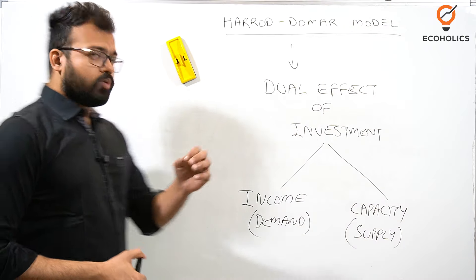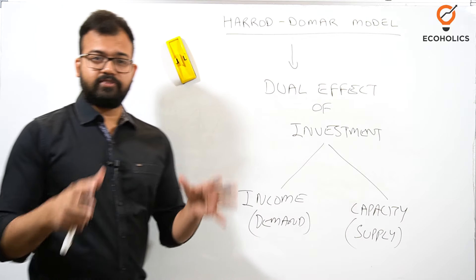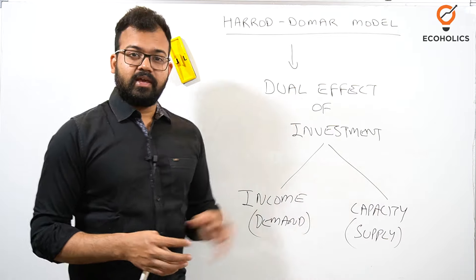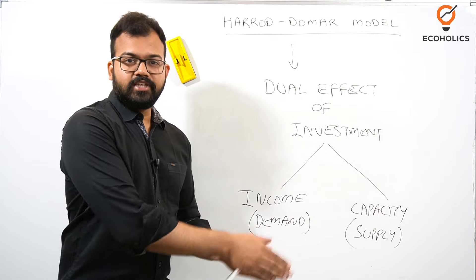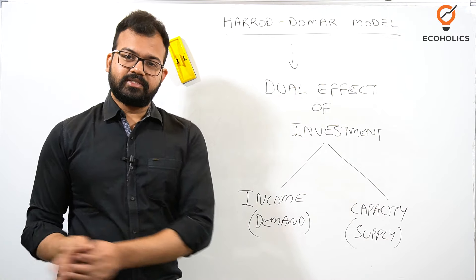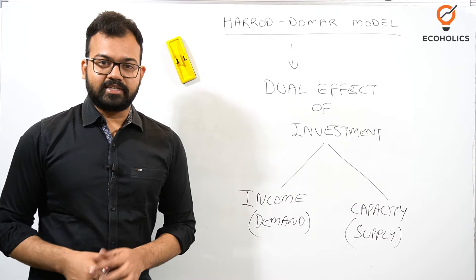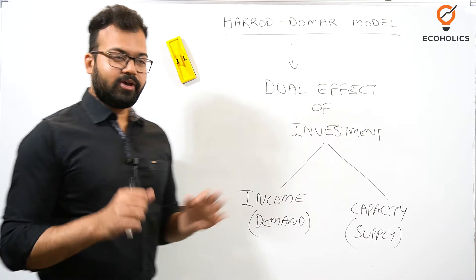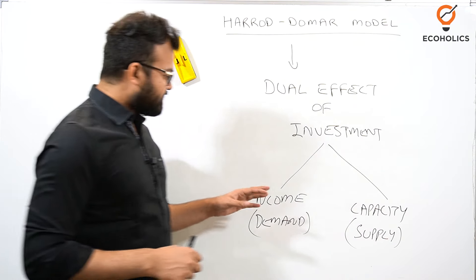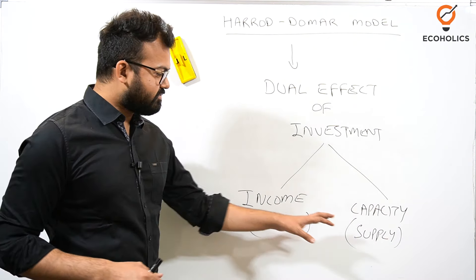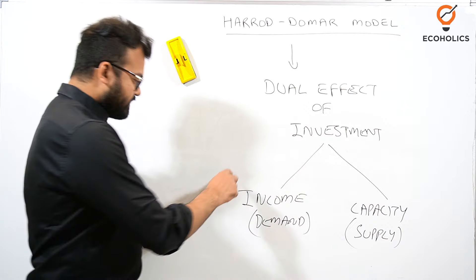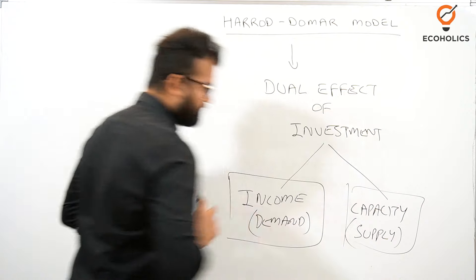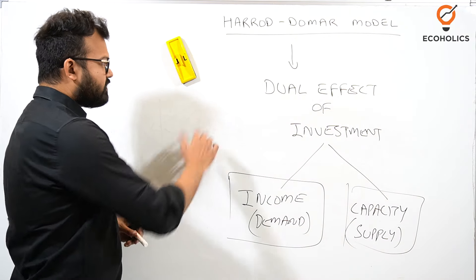An important question to consider is whether the Harrod-Domar model is inclined towards Keynesian economics or classical economics. The answer relates to its two effects. The income effect represents the demand side, and the capacity effect represents the supply side. Both effects are very important and we'll examine each one.